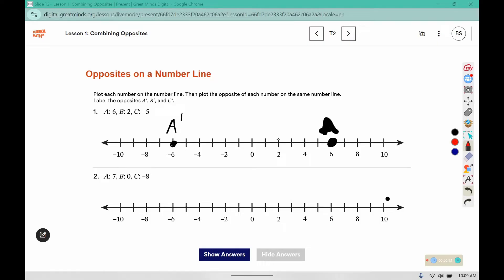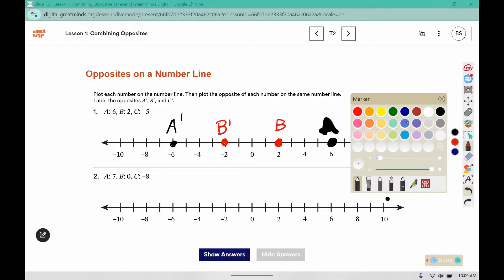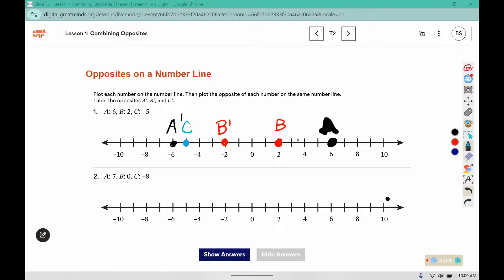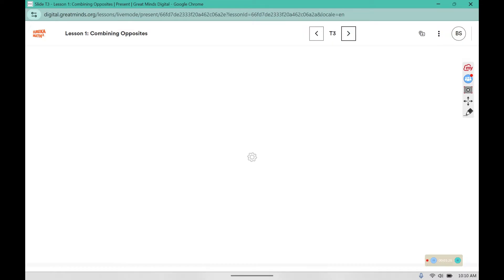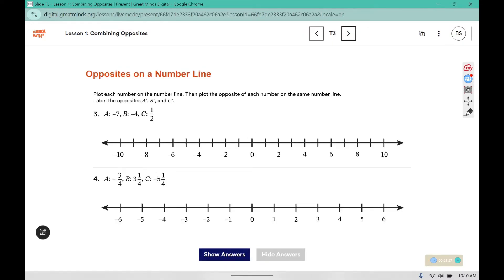We have b is at two, so b prime would be at negative two. c is at negative five, so c prime would be at positive five. Complete number two, three and four before you move on to the lesson.